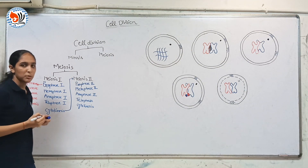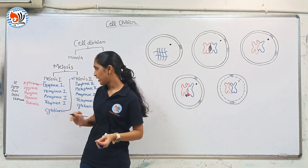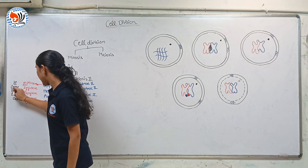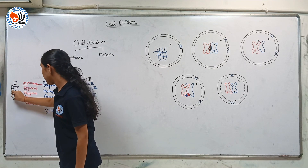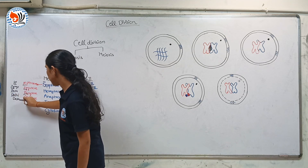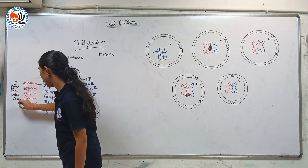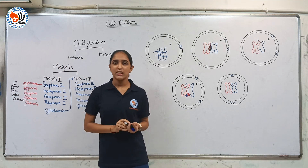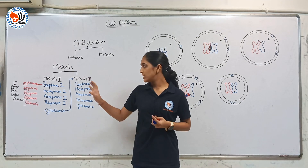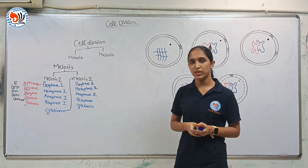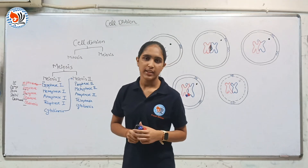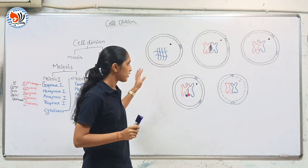The mnemonic is: 'Lay jayenge papa lilli bithane.' Lay stands for leptotene. Jayenge stands for zygotene. Papa stands for pachytene. Lilli stands for leptotene. Bithane stands for diakinesis. In this way, we can remember the five stages of prophase 1 of meiosis 1. Now let us see each stage in detail, starting with prophase 1.